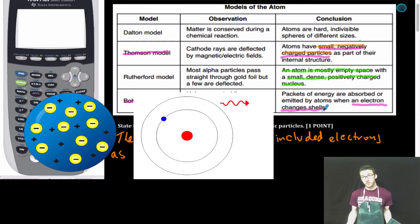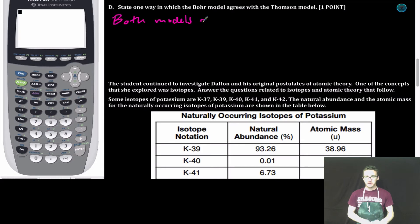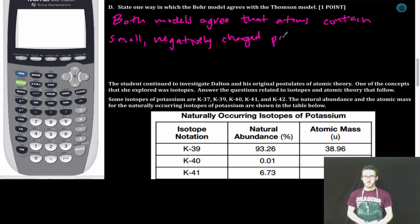The Thomson model thought that those electrons were embedded in a solid sphere, while the Bohr model indicates the electrons are hanging out in the empty space around the nucleus. Both models agree that atoms contain small, negatively charged particles, also known as electrons.